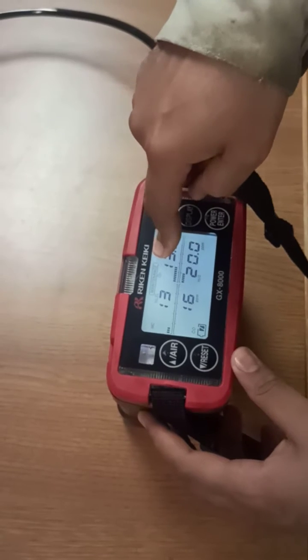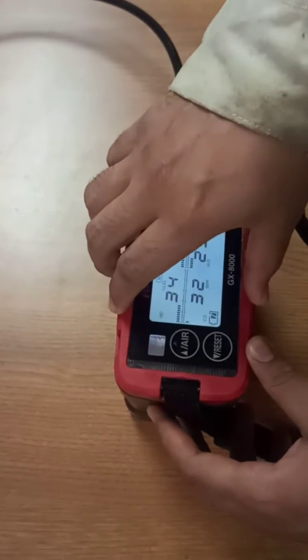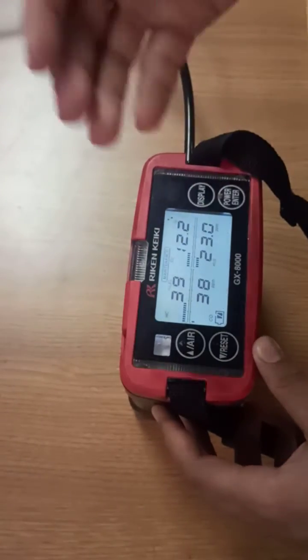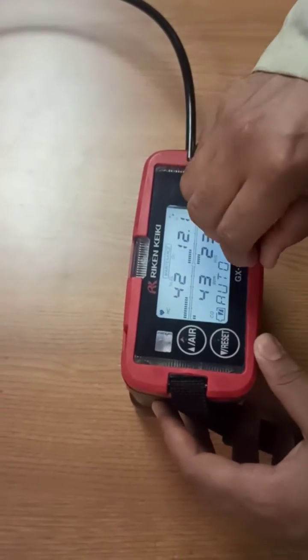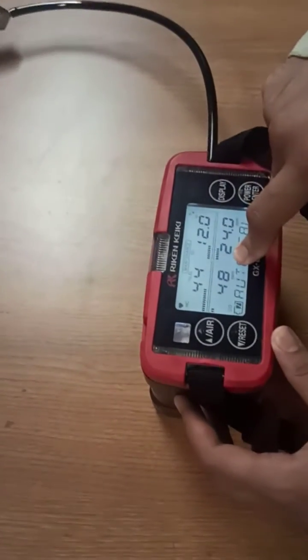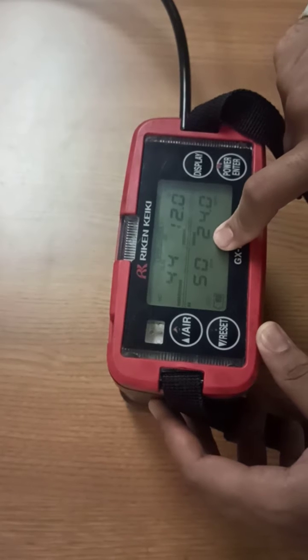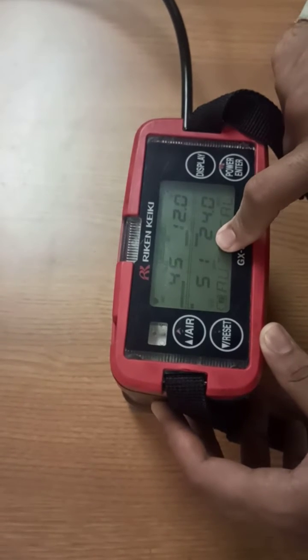The gas is coming inside the gas meter and it will show the composition, the percentage, the amount of gas. It takes a little bit of time to calculate.